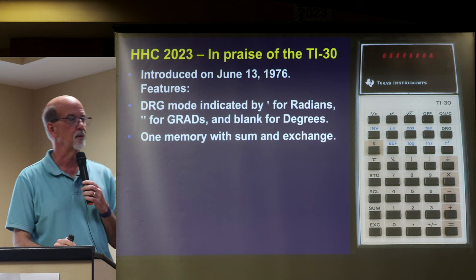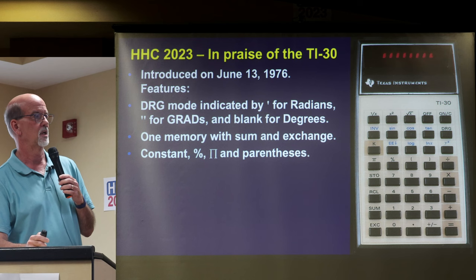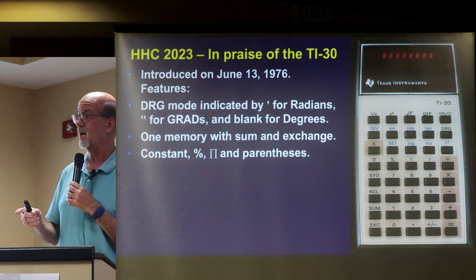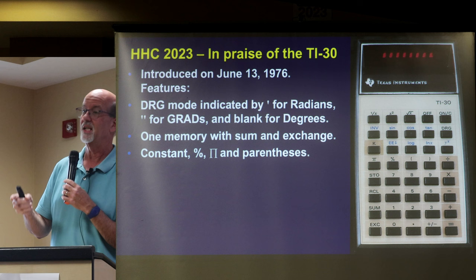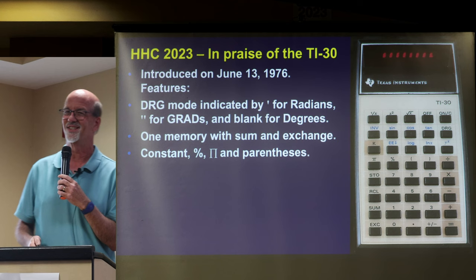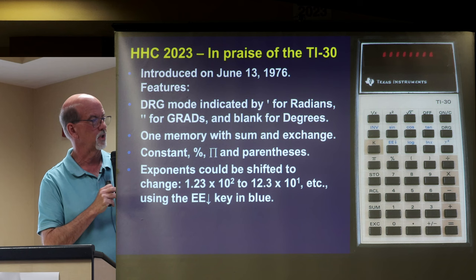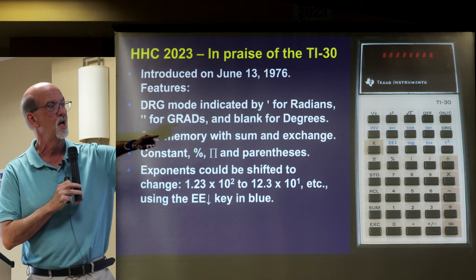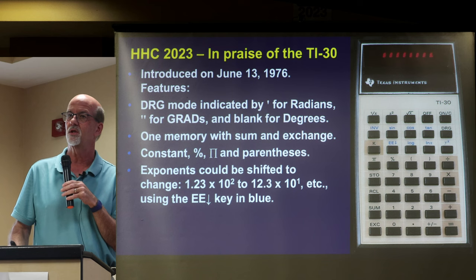Constant mode — you can't live without it. Percentage, pi, and parentheses. It'll probably say four pending operations, and 15 sets of parentheses — we didn't even know about that then. So in other words, if you don't know how to work this thing, put a couple extra parentheses in there. Exponents, strangely, could be shifted where you could take 1.23 times 10 to the second and turn it into 12.3 times 10 to the first, using that EE with the down arrow key — pressing it over and over if you wanted to show it in some other way.